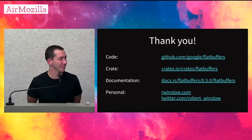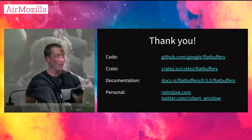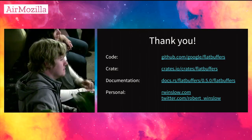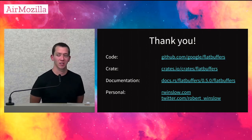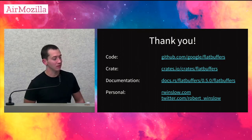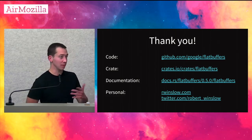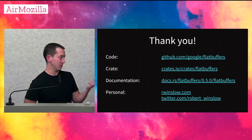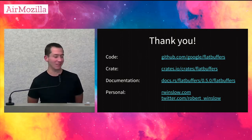Question: Rust's string type guarantees UTF-8. FlatBuffers has a string type — how is that interop handled? When we implement the verifier we could check for that. The general approach in the project is that the language writing the data should know it's a UTF-8 string and write correct data. On the read side, assuming you trust the source, you can cast it to a UTF-8 string. This is another feature to work on for the verifier.